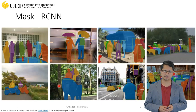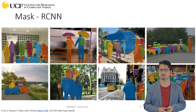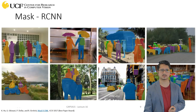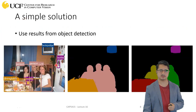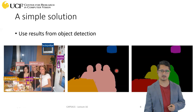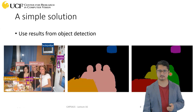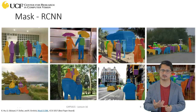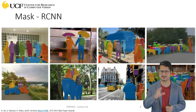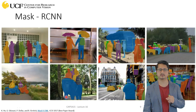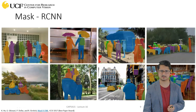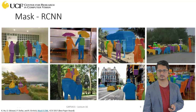Today we are going to talk about one of the state-of-the-art algorithms for object detection as well as instance segmentation — this is called Mask R-CNN. It's based on the same simple solution we discussed, doing object detection and then refining finer boundaries for each instance separately. It's built on top of all the algorithms we studied — R-CNN, Fast R-CNN, and Faster R-CNN — and it addresses some of the issues in Faster R-CNN while also giving you segmentation boundaries for each instance, solving instance segmentation.